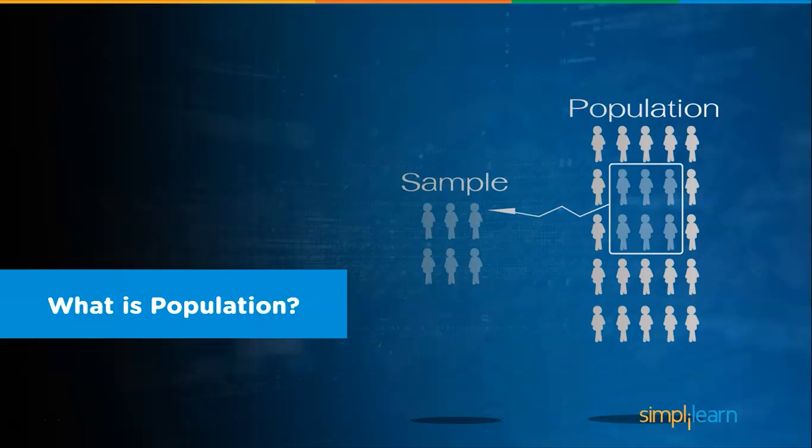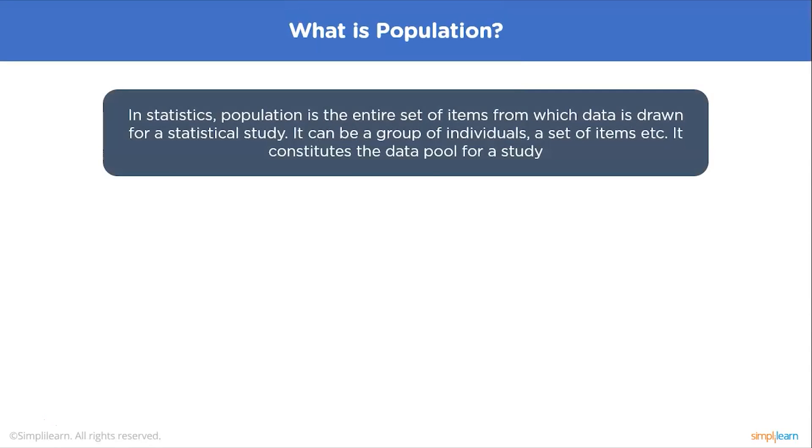So what is the population? In statistics, population is the entire set of items from which data is drawn for a statistical study. It can be a group of individuals, a set of items, etc. It constitutes the data pool for a study. In general, a population is the entire group that you want to draw conclusions about.